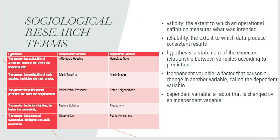Now let's talk about sociological research terms. Validity is measuring what we said we're measuring. Reliability is when we measure a variable and it produces the same results over and over again. A hypothesis is an educated guess. An independent variable is a variable that influences the dependent variable. The dependent variable changes based on the independent variable. Think of it this way: an independent person influences others who are dependent.